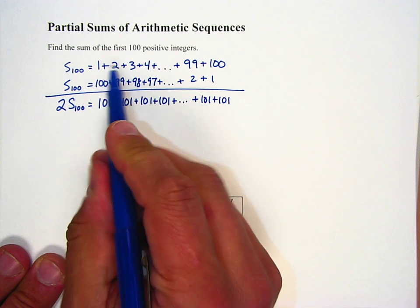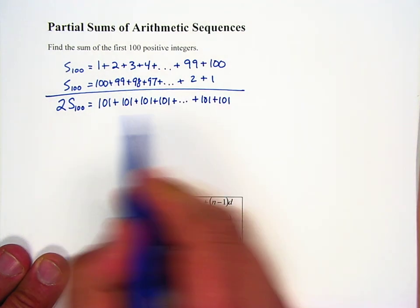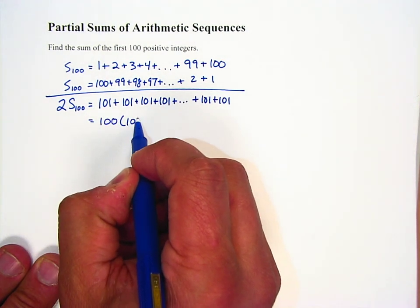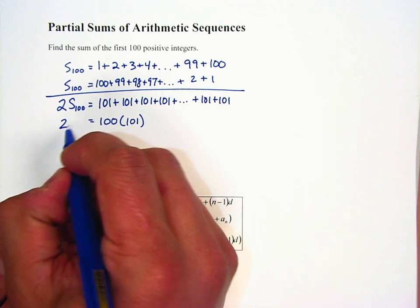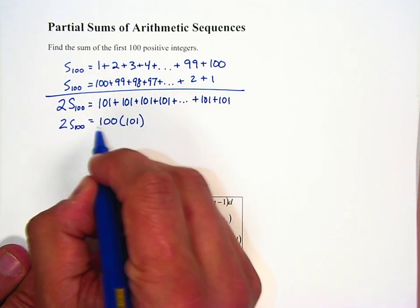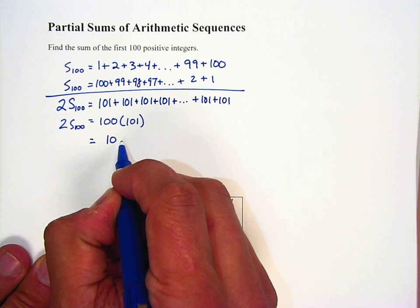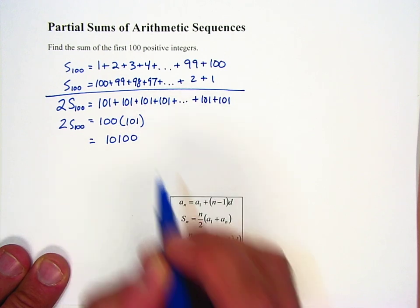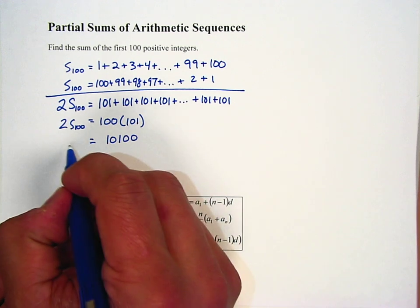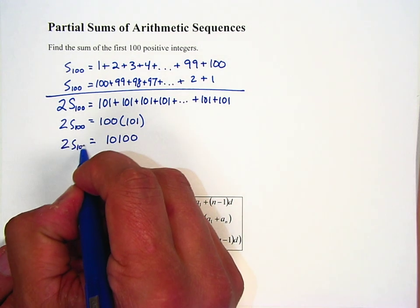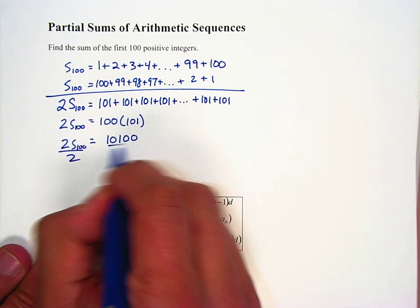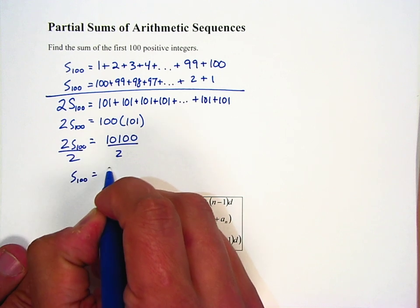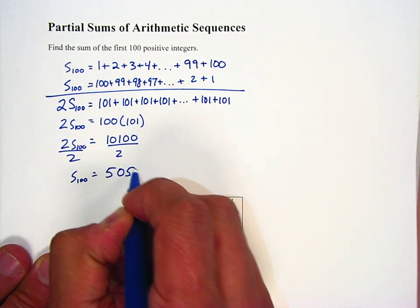He figured out there are 100 of these 101's, so he could multiply to get 10,100. And that's double the sum, so if he divides that by two, he gets the sum of 5,050.